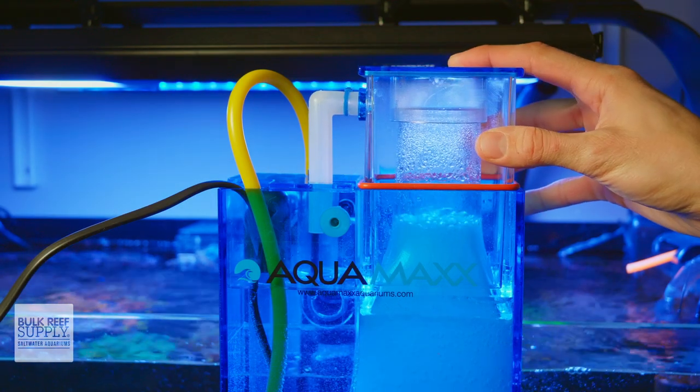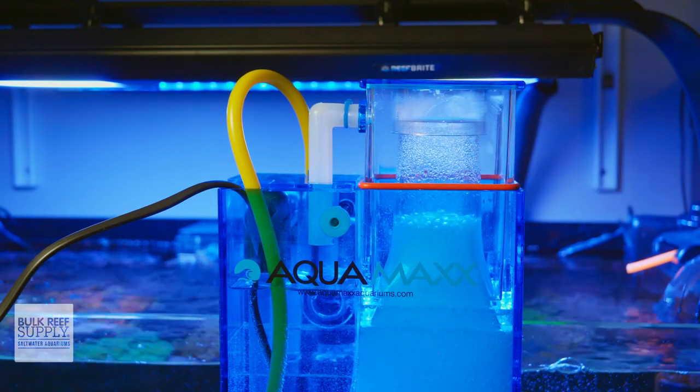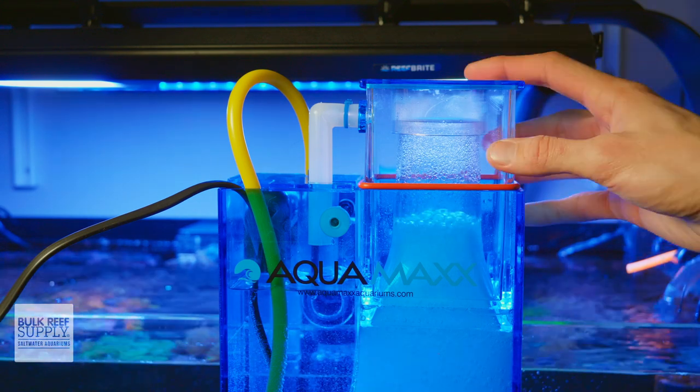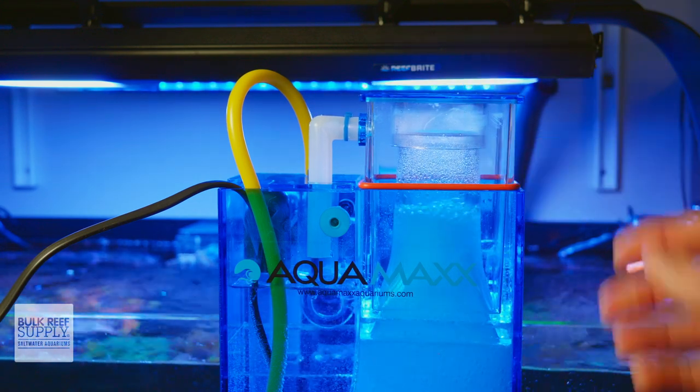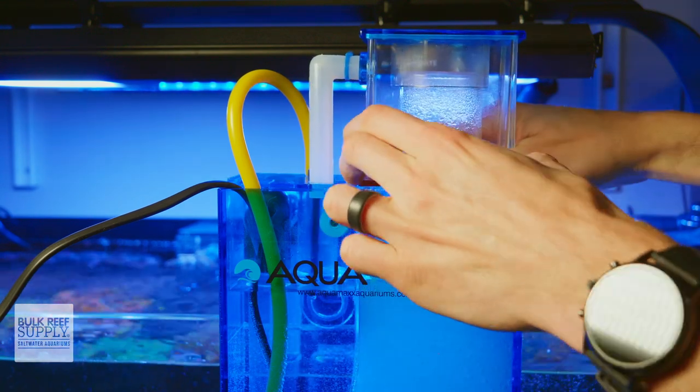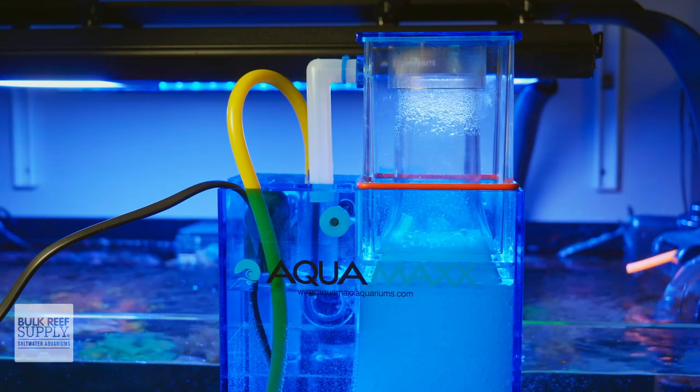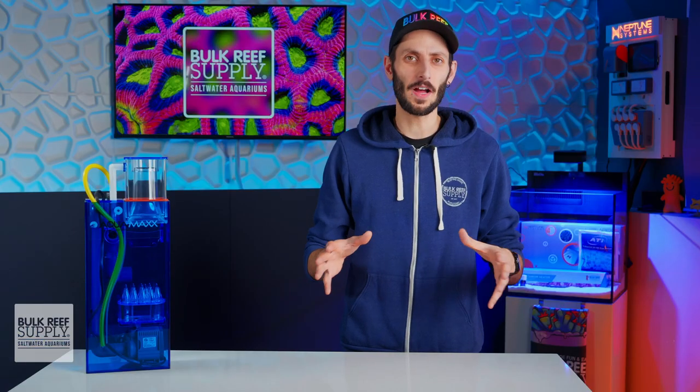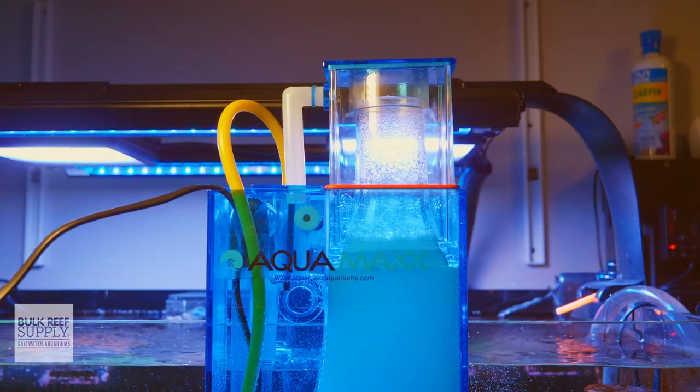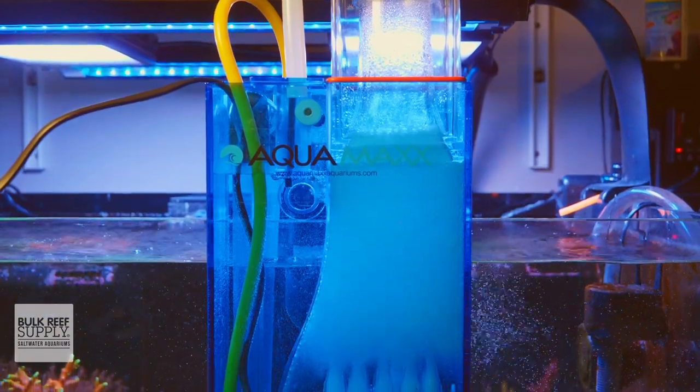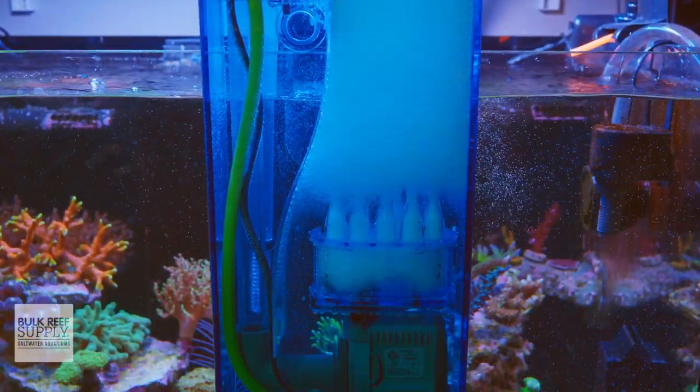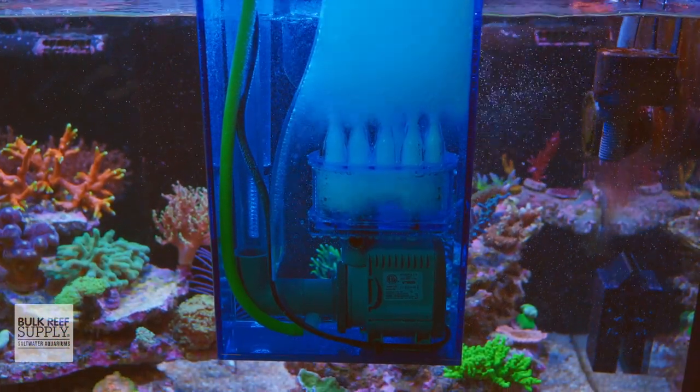Once the skimmer's primed and running, you can control whether to collect a wet or dry skimmate by adjusting the height of the collection cup within the skimmer body, which is as simple as moving that red O-ring around the cup so that it sits higher on the cup if you wanna raise the water level, or lower on the cup if you need to lower the water level within the neck. While there is no valve included, you could also very easily add an inline air valve to that Venturi tube if you also wanted to be able to dial in the air to organics ratio, but I do find the skimmer's rating is pretty accurate, so many reefers will likely find that they don't need that extra point of control.